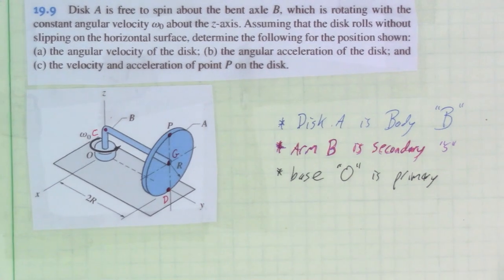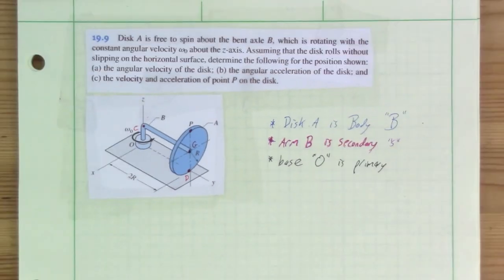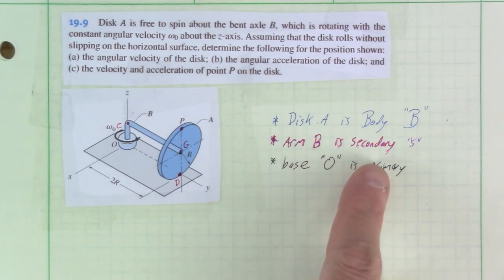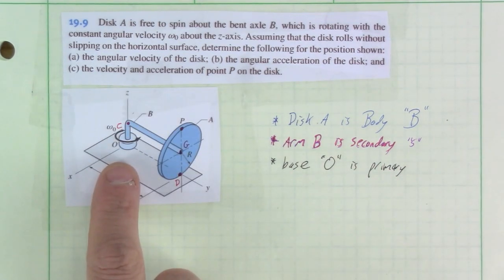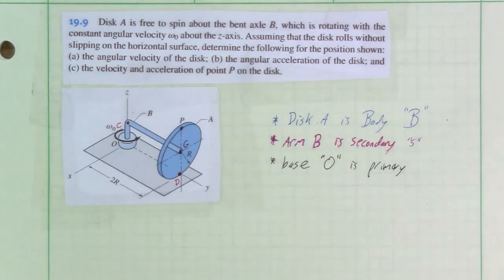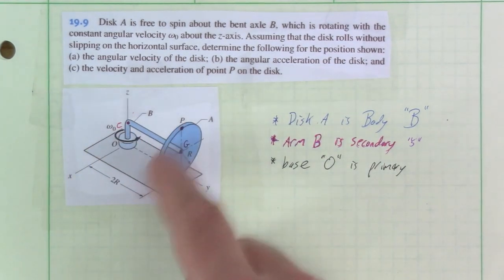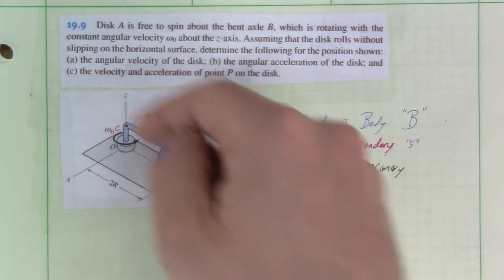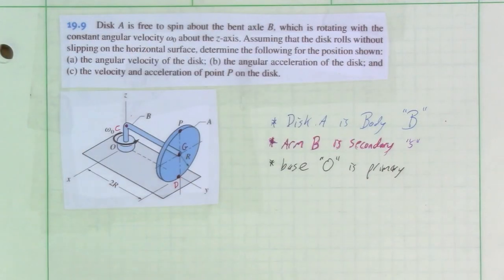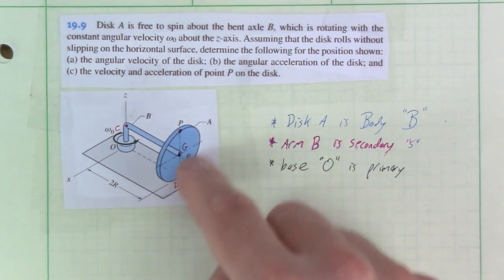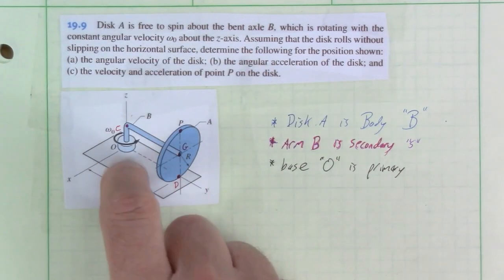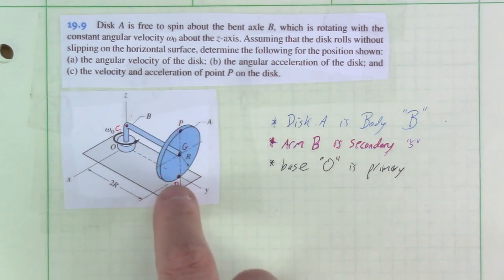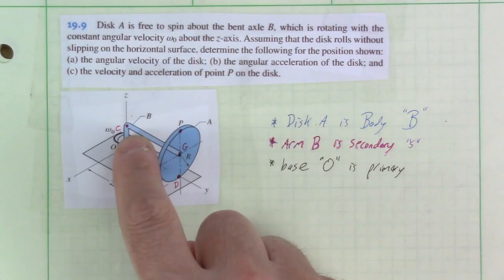The body is the thing rotating about another body. Arm B is the secondary — it rotates about the primary. The reason we need this intermediate secondary frame is that the rotation of the disk is constant with respect to the arm, but any point other than G is not rotating purely about the disk axis — it's also rotating about C in a complicated fashion.